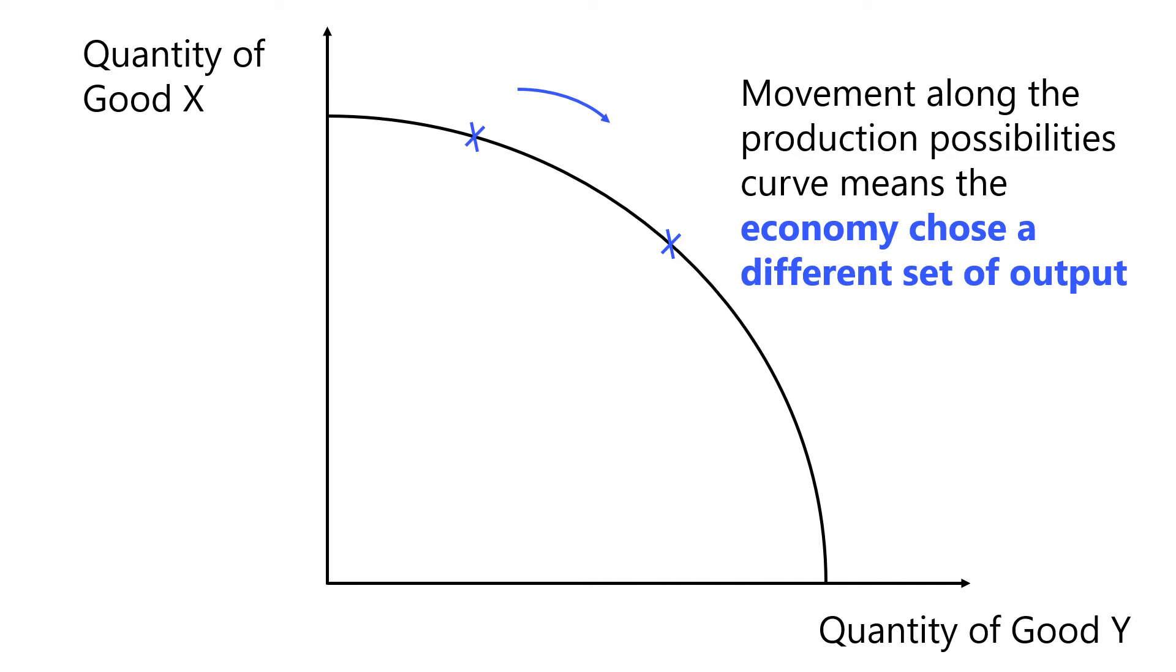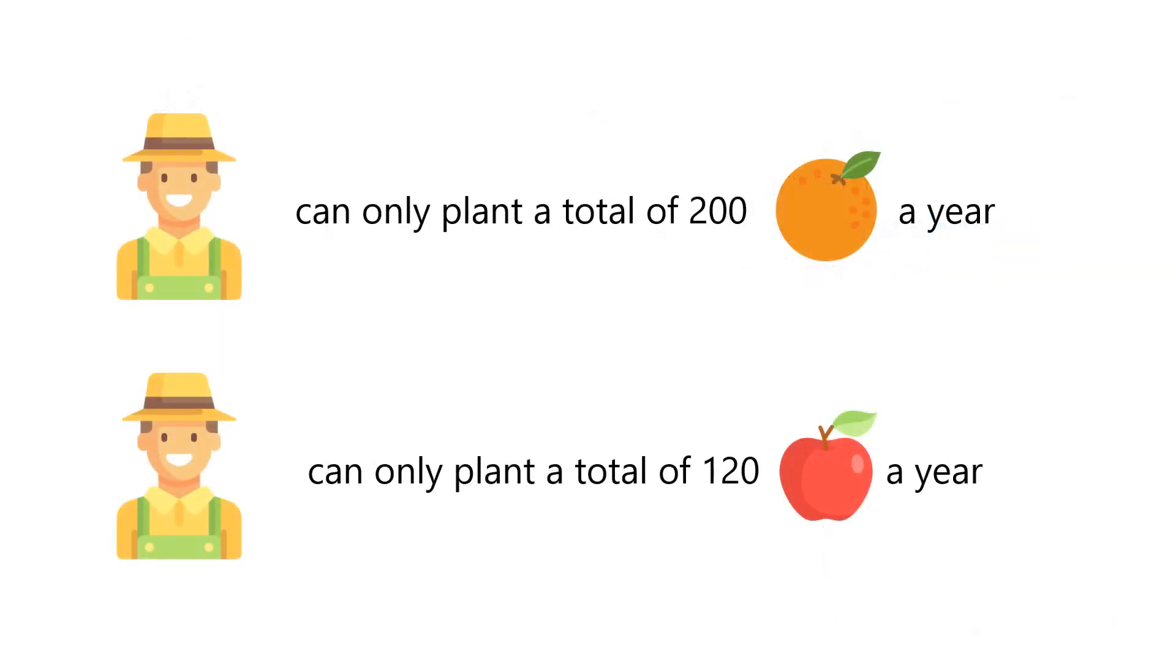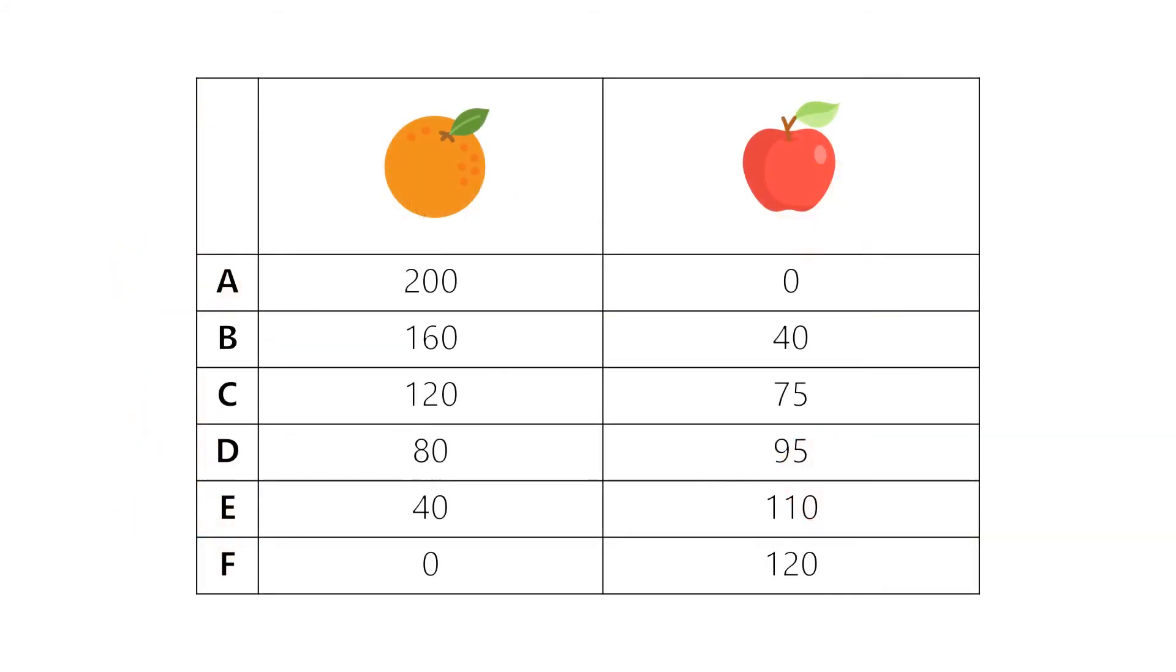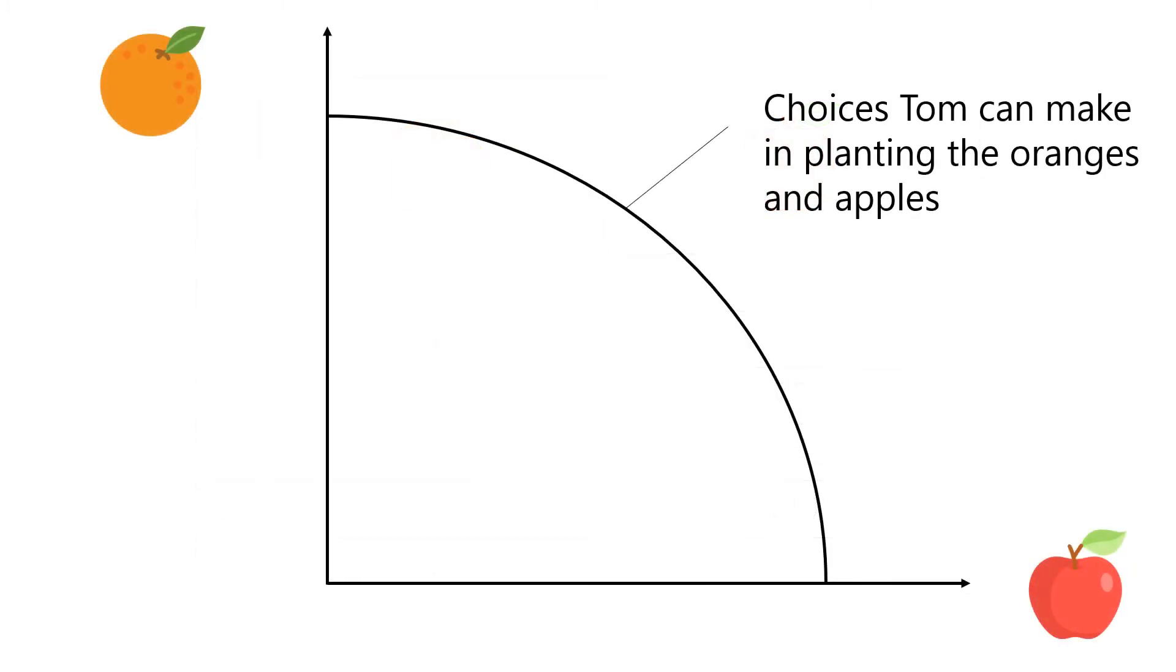To make things clearer, we will illustrate this with the example we used previously. Tom is a hard-working farmer who owns a small plot of land which can be used to plant oranges and apples. We went ahead to create some choices Tom could have made on the number of oranges and apples to plant. This is the Production Possibilities Curve for oranges and apples Tom can plant in a year.